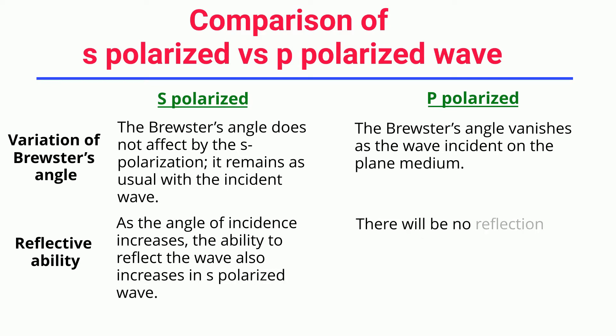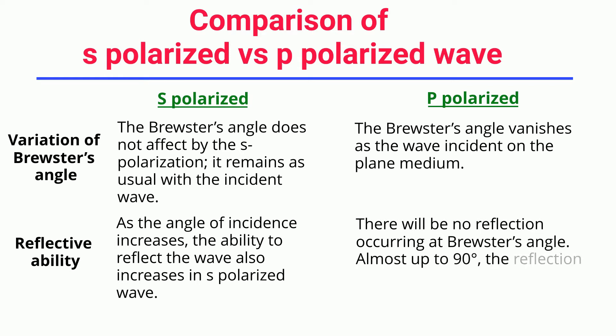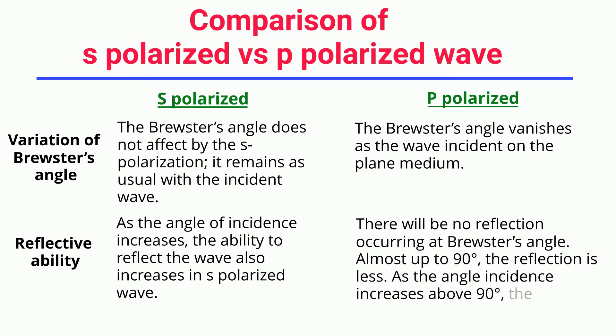There will be no reflection occurring at Brewster's angle. Almost up to 90°, the reflection is less. As the angle of incidence increases above 90°, the reflective ability slightly increases.